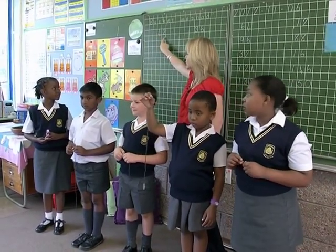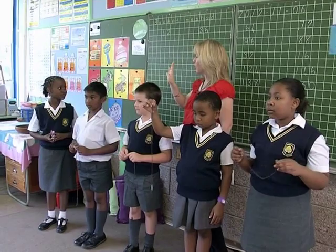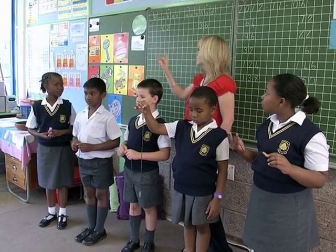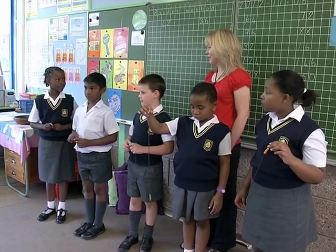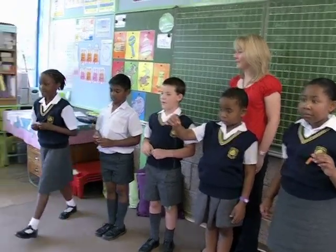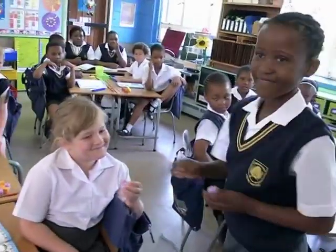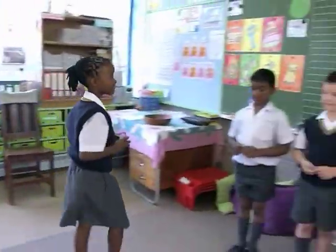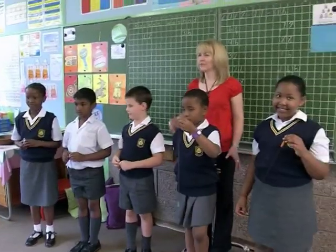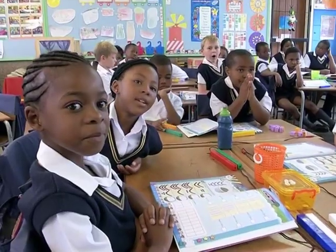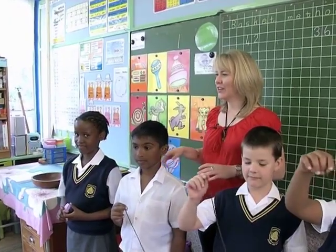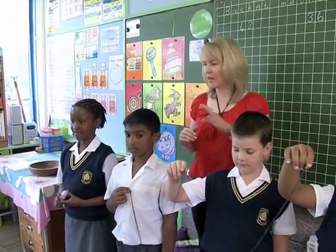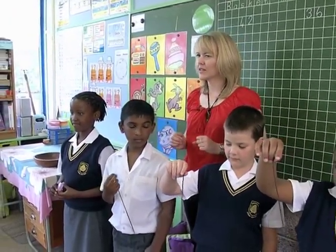Our number is 42. Do you need four blocks or do you need two to match this number? 2. Please could you give Megan two blocks. Now we're going to count the number all together starting with Pearl: 10, 10, 20, 30, 40, 2. Now we're going to share these strings and the two blocks equally.